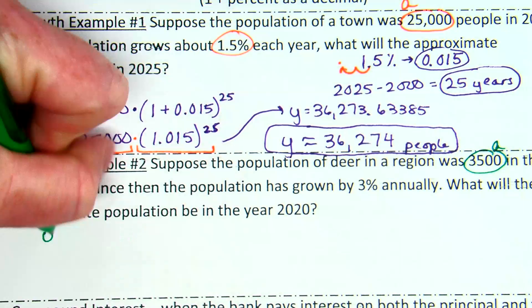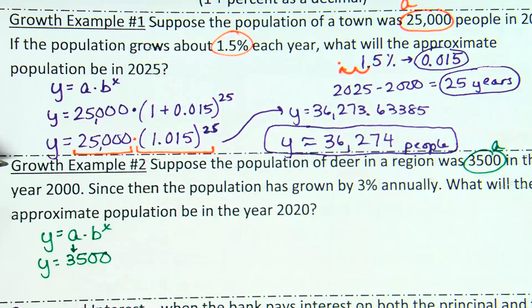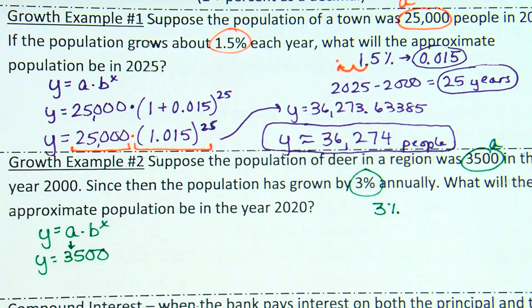Yep. Yep. They told us the initial amount of deer was 3,500. And so, when we do A times B to the X, A will be 3,500. Okay. What else did they tell me? Okay. Three percent. What do we know about three percent?